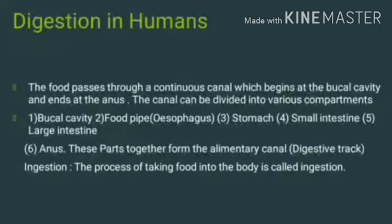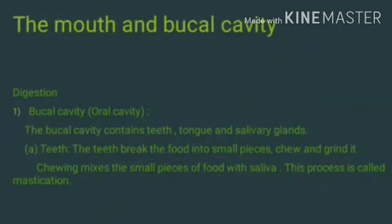The canal starts from the mouth and ends at the anus. It can be divided into various compartments: buccal cavity, food pipe or esophagus, stomach, small intestine, and finally large intestine. It ends at the anus. The intake of food is called ingestion. The mouth and buccal cavity is the first step in the digestion process.